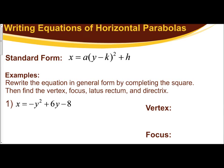In this video, we're going to transition over to horizontal parabolas. The patterns still hold with the distance from the vertex to the focus and the vertex to the directrix. However, it goes left and right because it's horizontal. We're going to start off with our standard form: x equals a times the quantity y minus k squared plus h. To write the equations, we still have to apply the concept of completing the square.